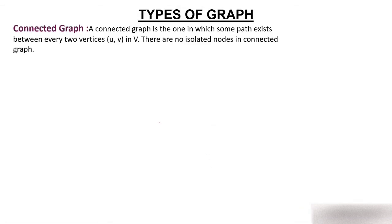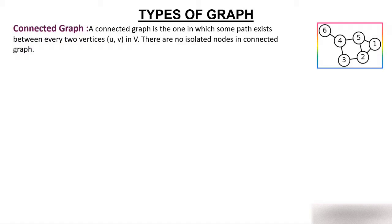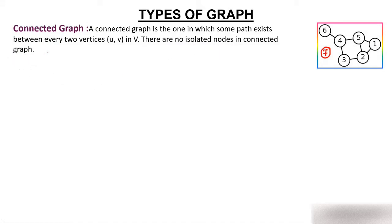A connected graph is one where every node is connected — no node is isolated. There is a path between every pair of nodes. If a node like node 7 exists with no connections, it is an isolated node and the graph is no longer connected.